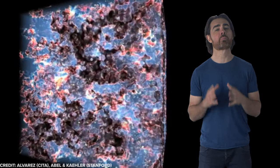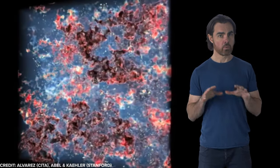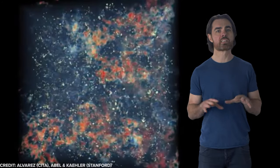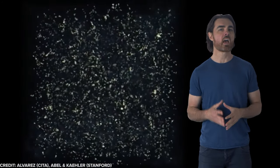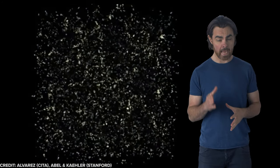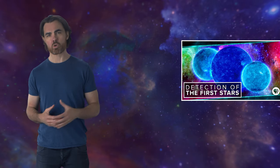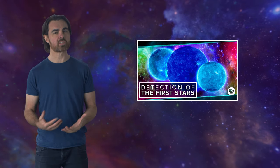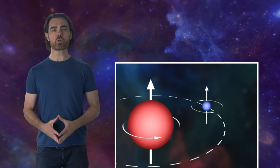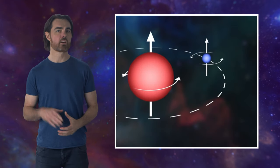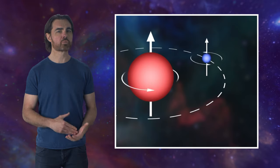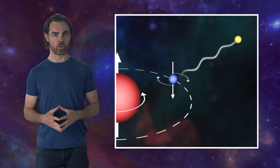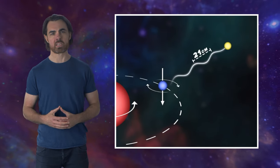Two specific photons were in particular danger. In one case, that absorption signaled the end of the dark ages, and in the second, the end of the epoch of re-ionization. We've actually talked about the first, so this is just the TLDR. When the electron in cold hydrogen gas flips its spin direction, it either absorbs or emits a radio photon with a wavelength of 21 cm.